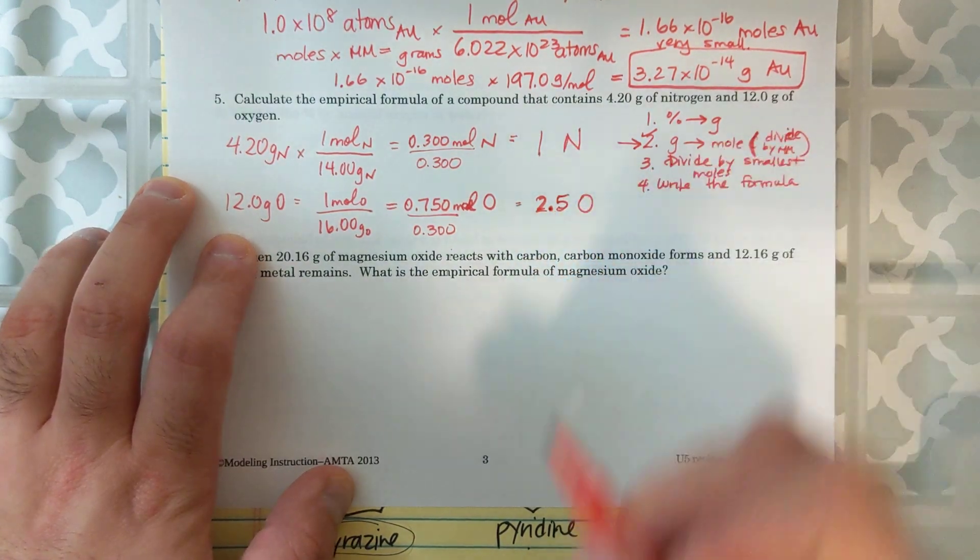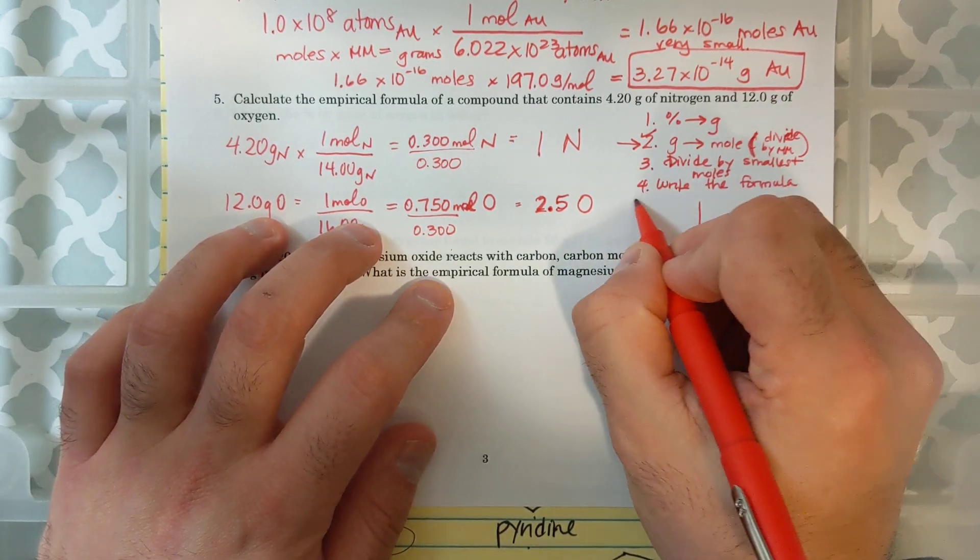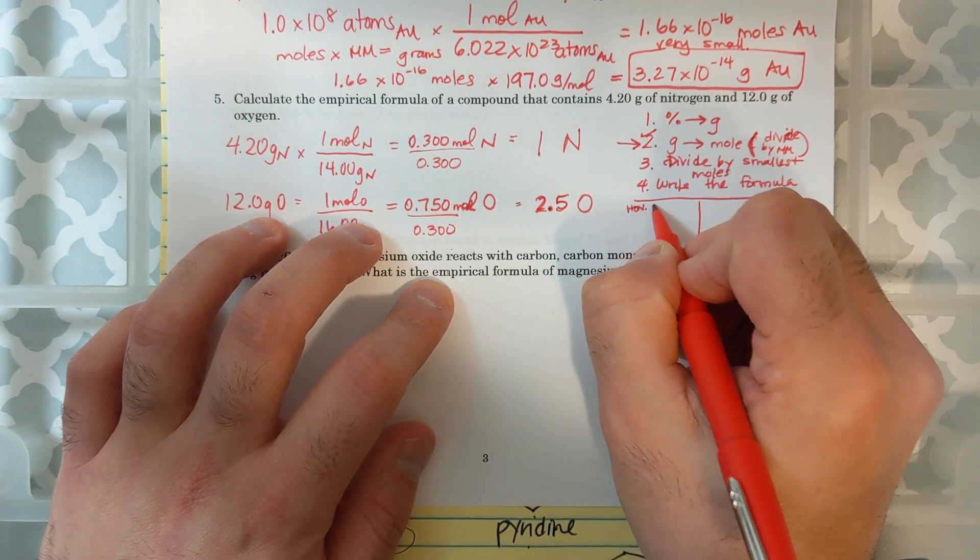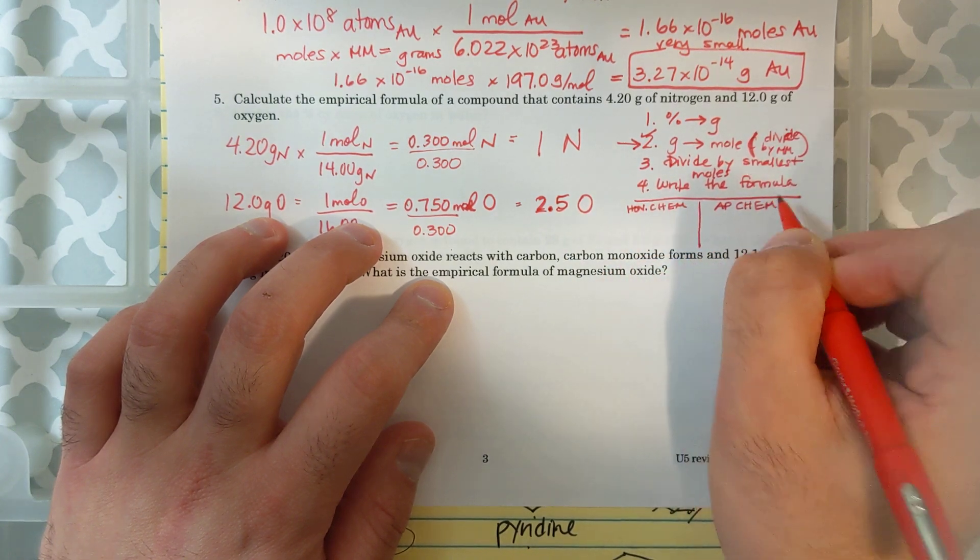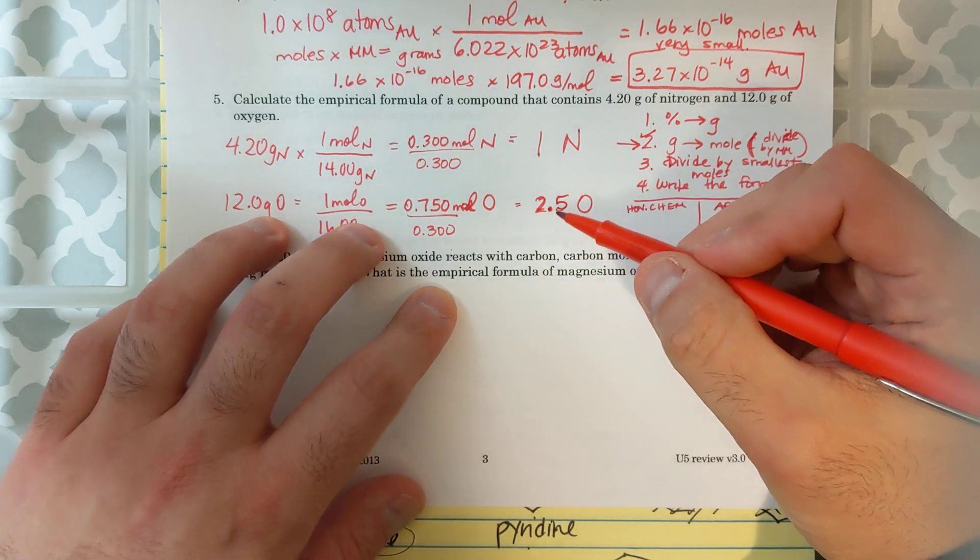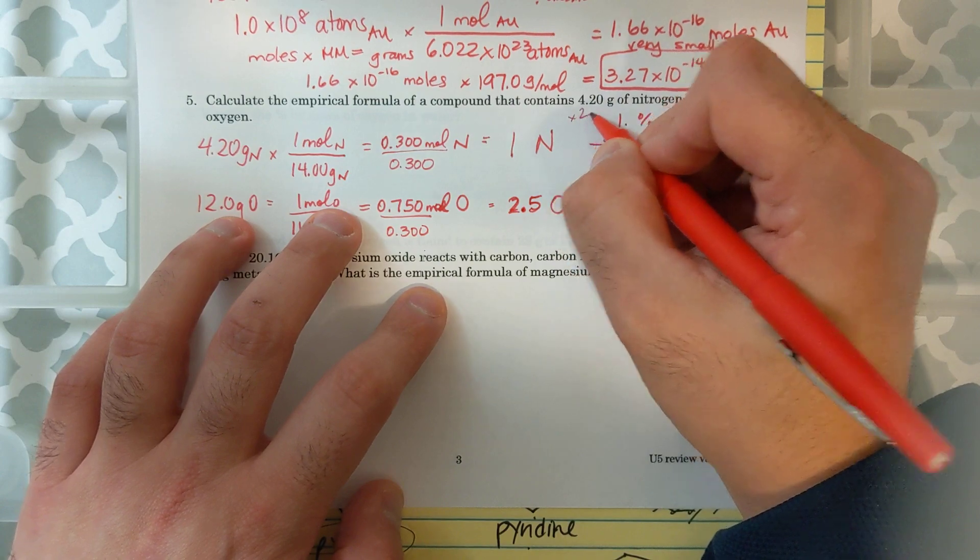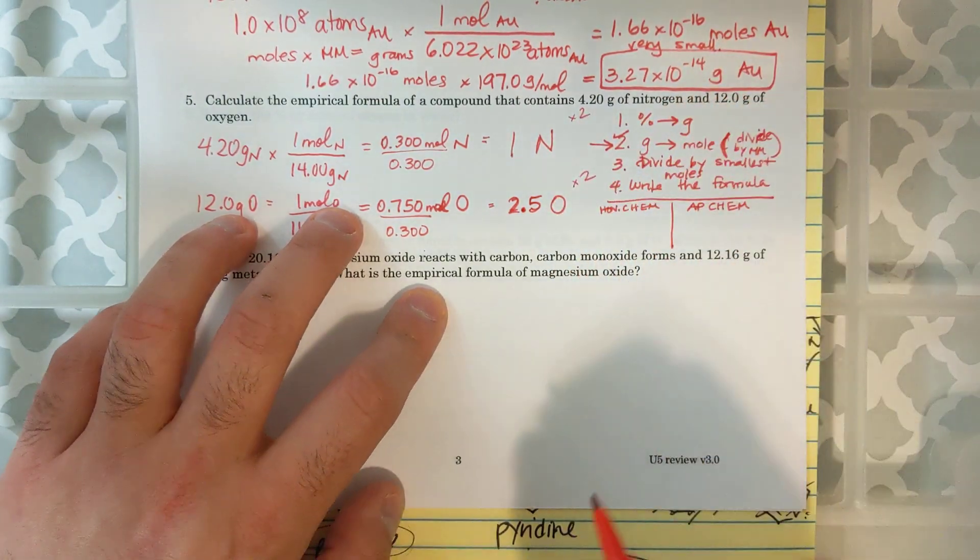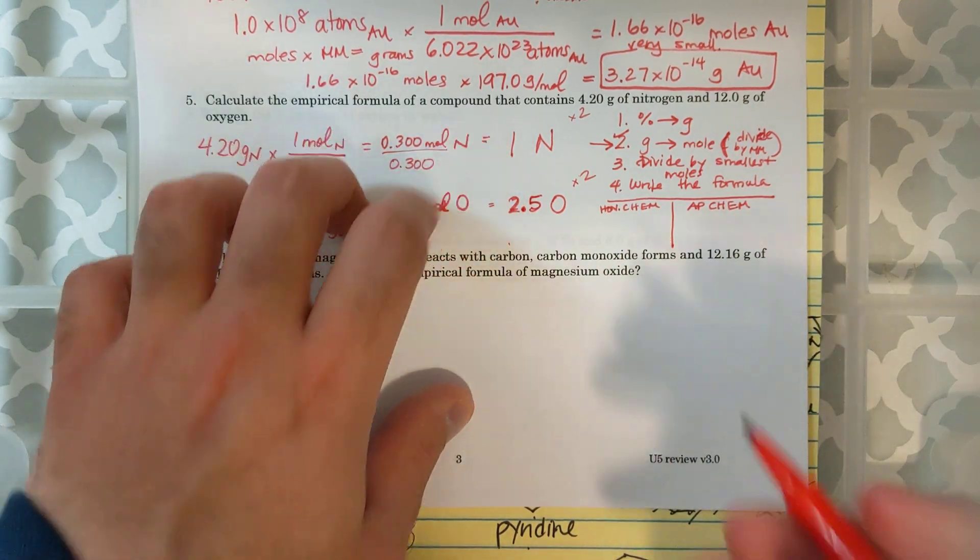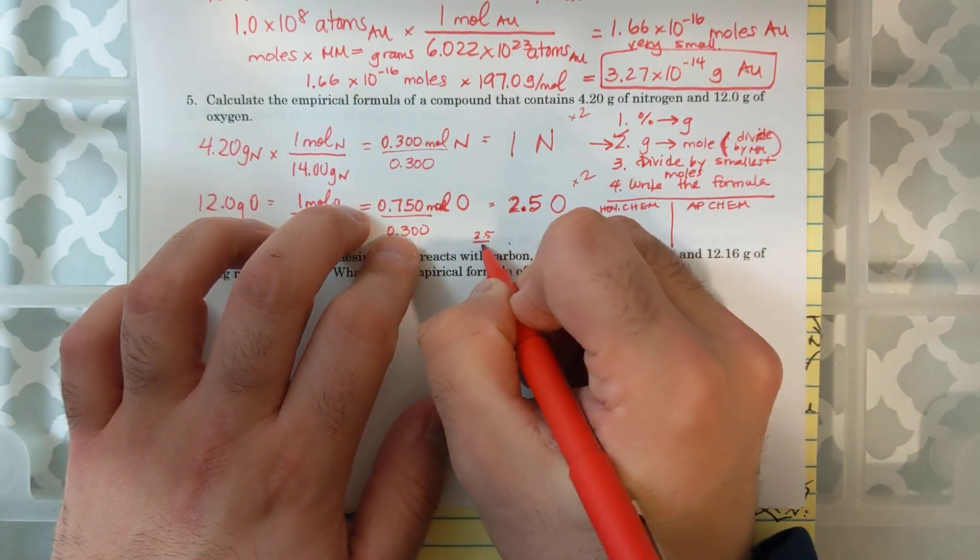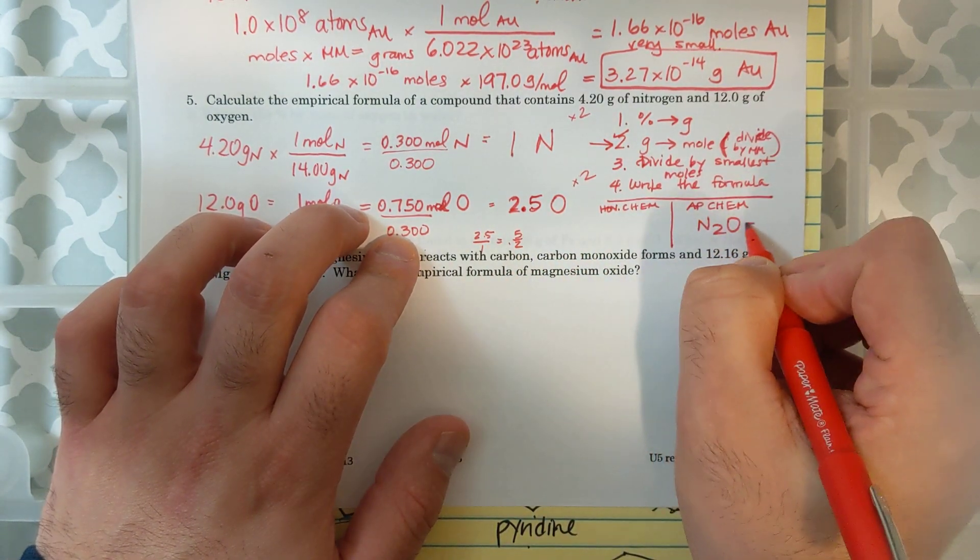And so I have 1N and 2.50. Now I'm going to write both the answers here. For honors chem, we're not going to worry about the 0.5 rule. But if you did get 0.5, you'd have to multiply both of these by 2 to get whole numbers. So for AP chem, I'd multiply both of these by 2. And a 2.5 to 1 ratio is basically 5 to 2. 2.5 over 1 is the same as saying 5 over 2. So that would be N2O5.